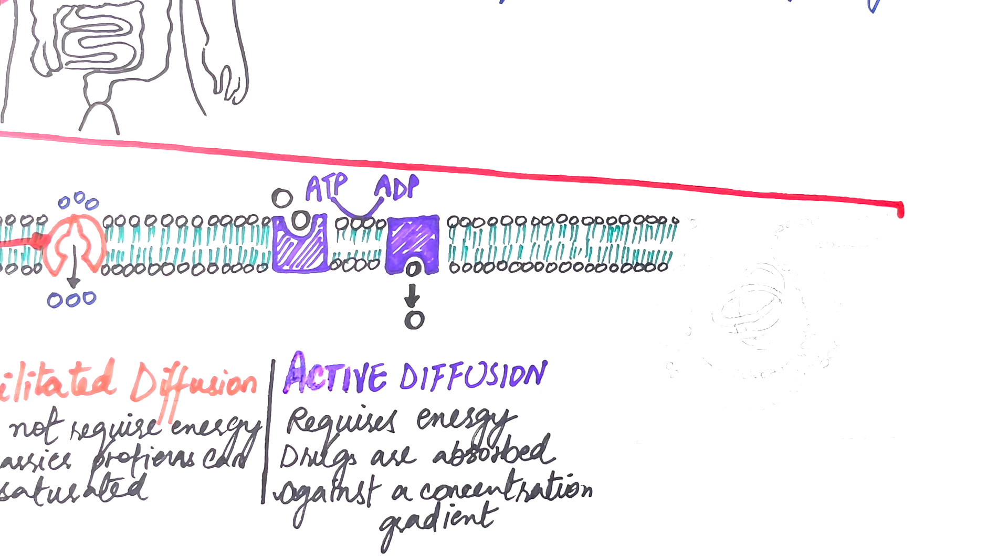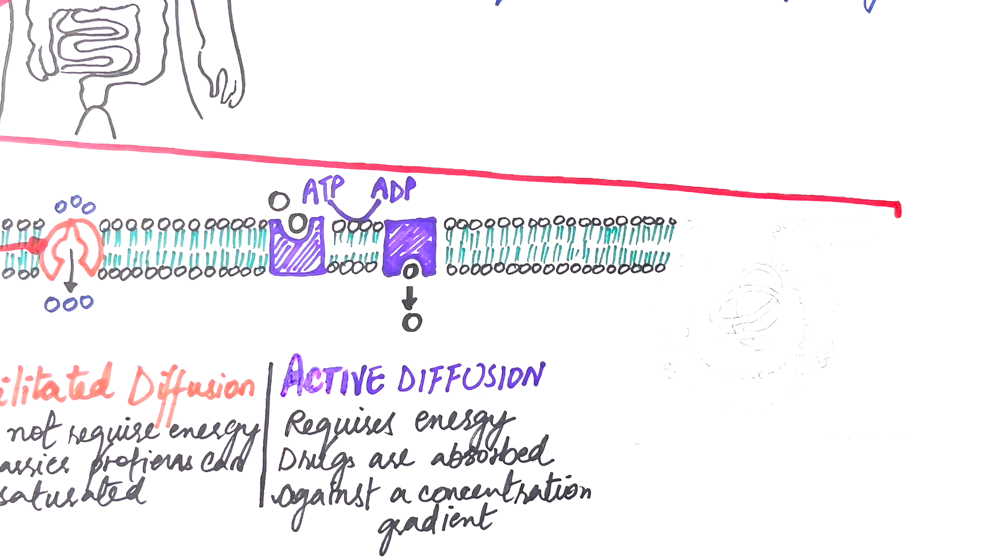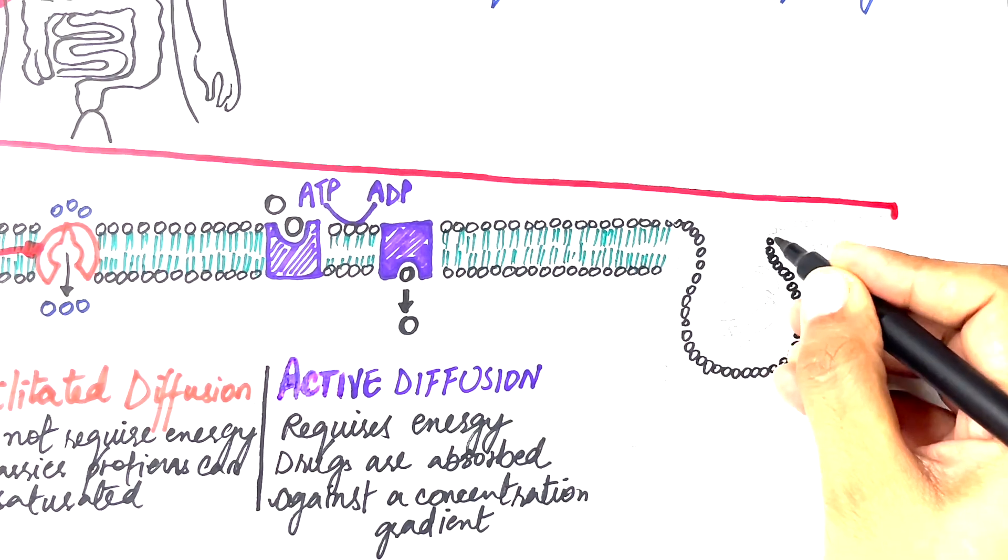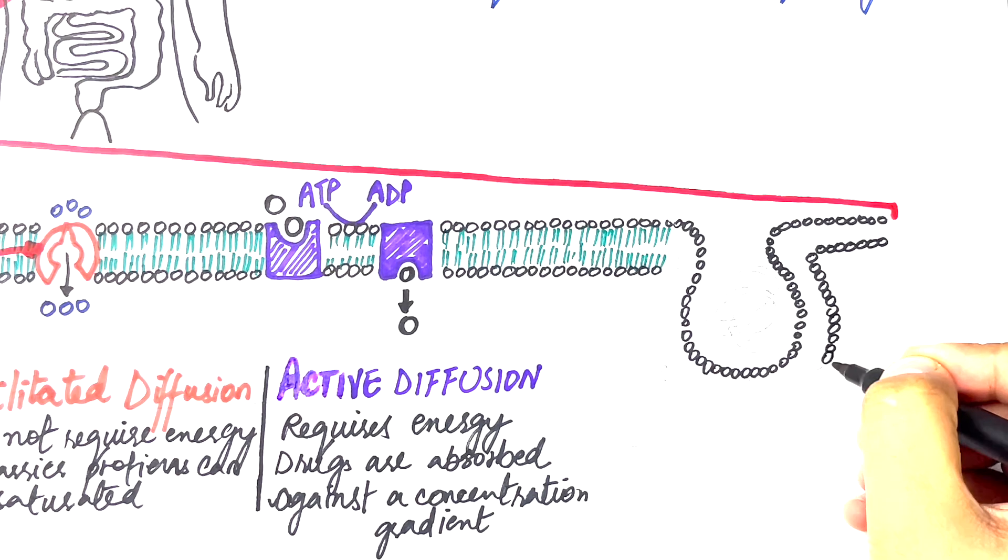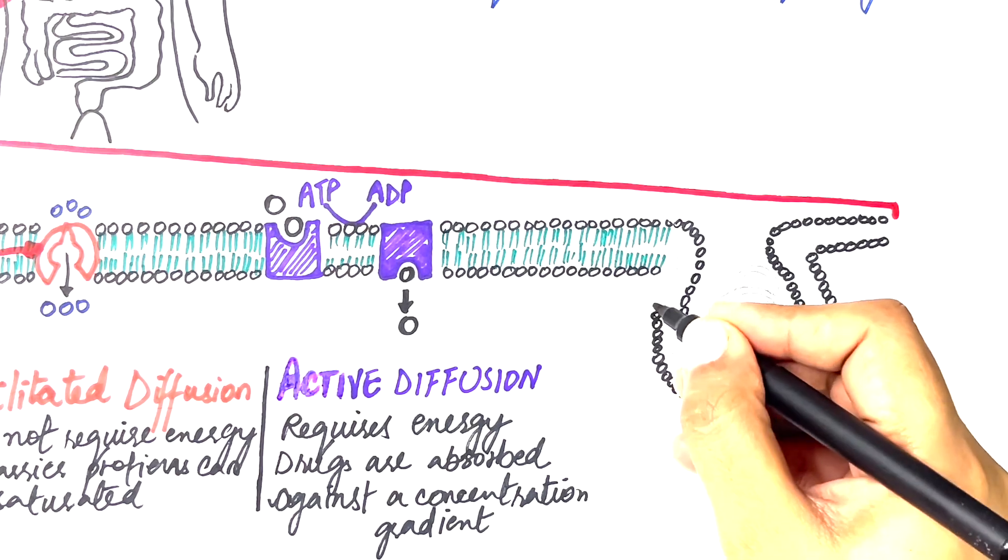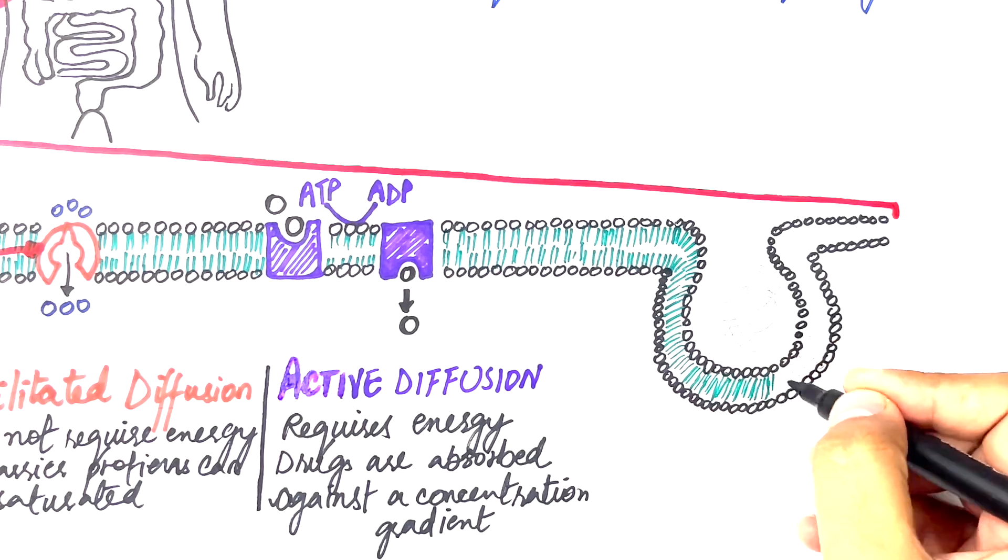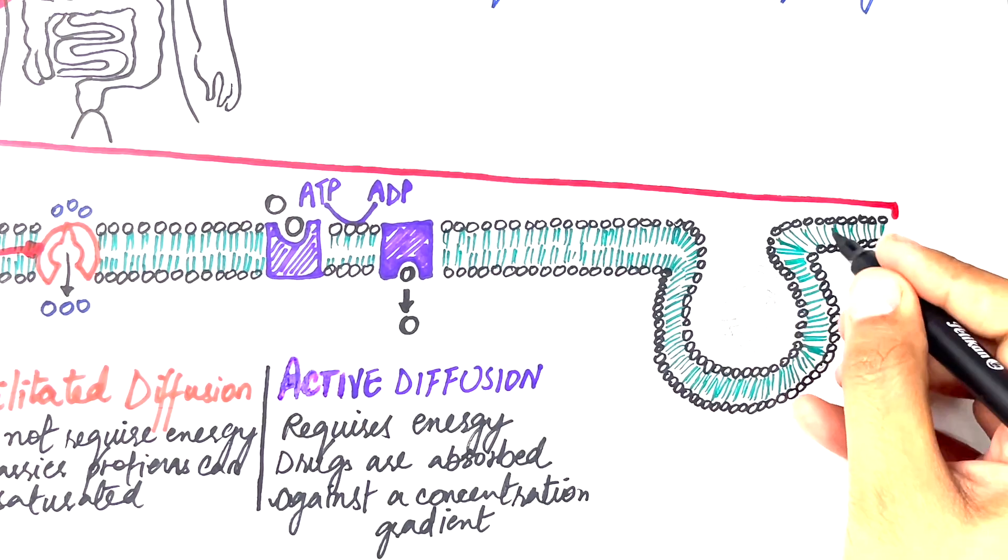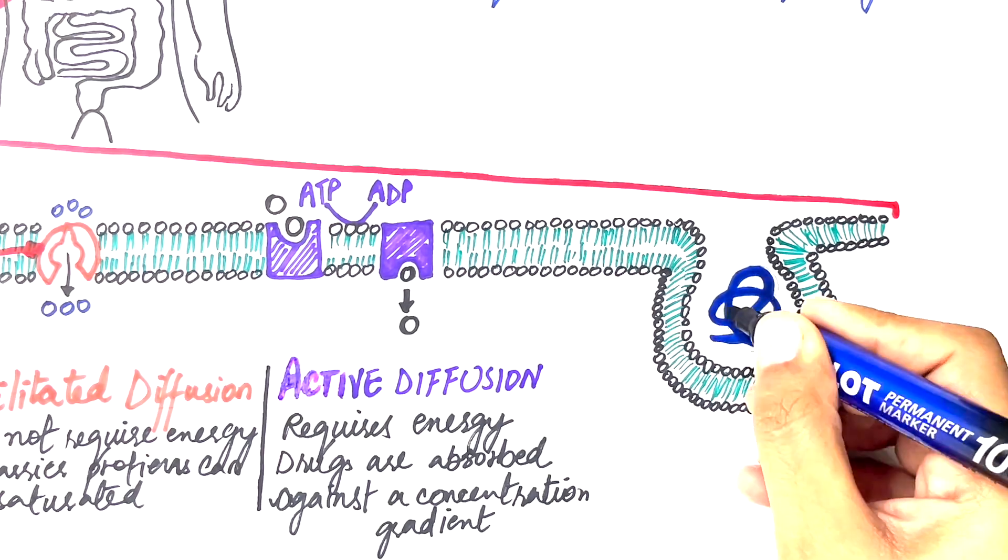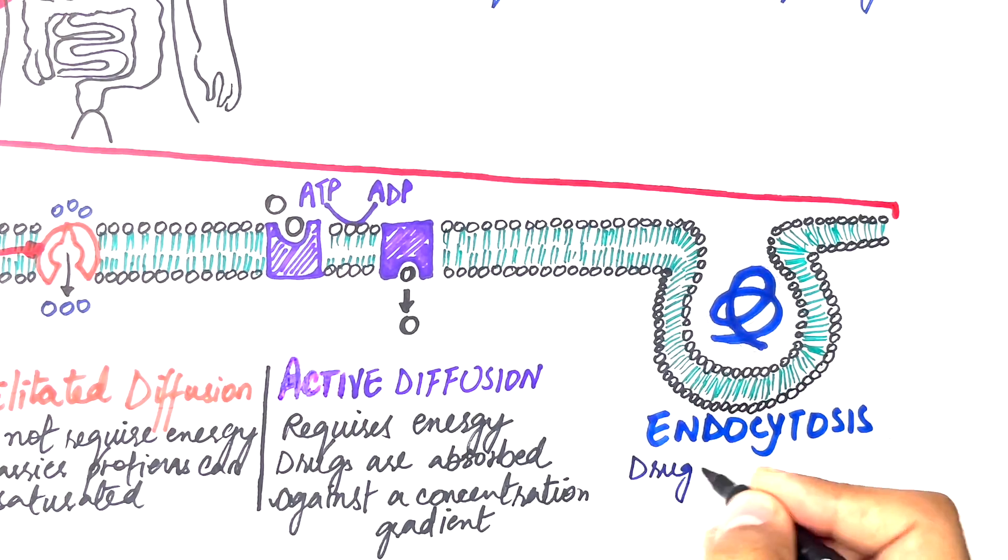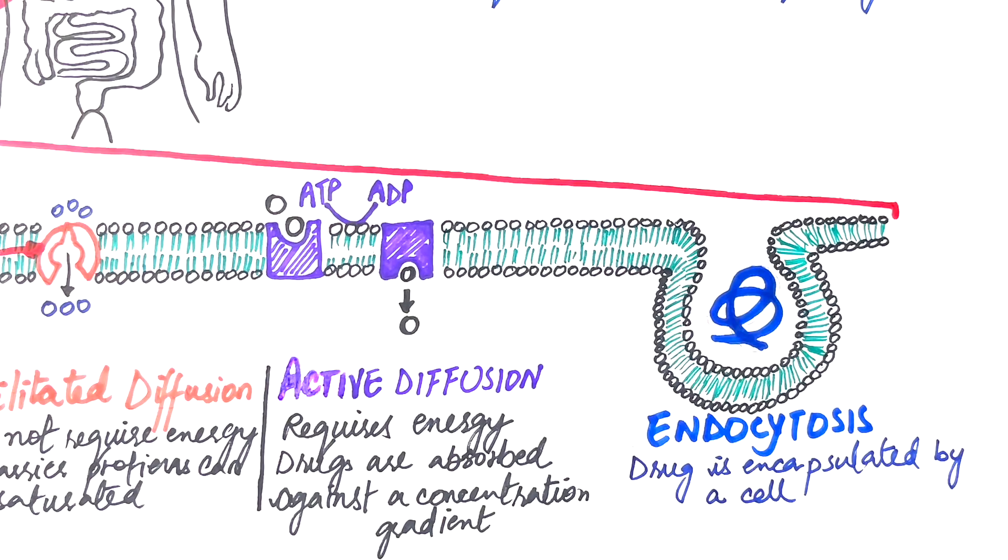Lastly, the endocytosis involves absorption of fluid or drug particles which are relatively larger in size. The drug is encapsulated by a cell. The membrane of the cell closes around the pharmacological substance and infuses to form a complete vesicle which later detaches and moves into the inside of the cell. This process also requires energy to take place.